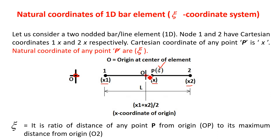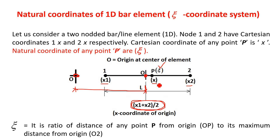Here, the origin of the natural coordinate ξ is at the center. The origin of the Cartesian coordinates gives us X1, X2, and X. The Cartesian coordinate of this origin (center of element) is (X1 + X2)/2. So the distance from the Cartesian origin to the center is (X1 + X2)/2, and the Cartesian coordinate of point P is X. The natural coordinate of this center is ξ = 0, because the origin is always at the center. We will also prove this in the derivation.